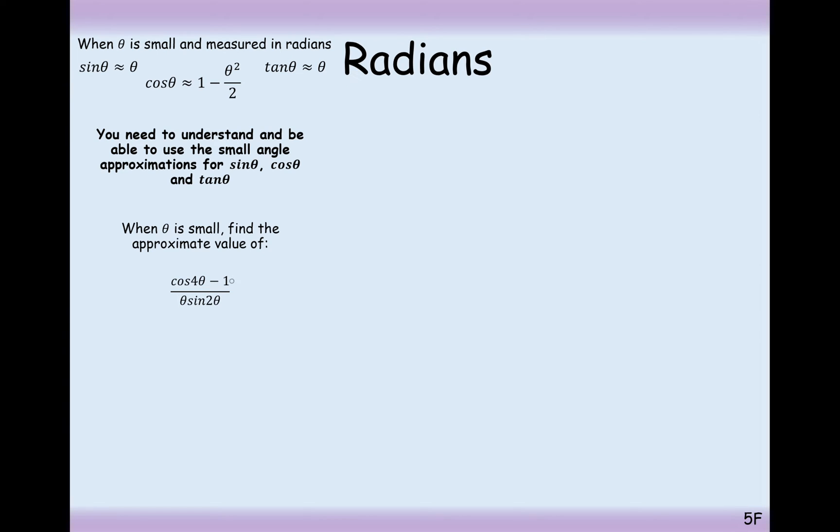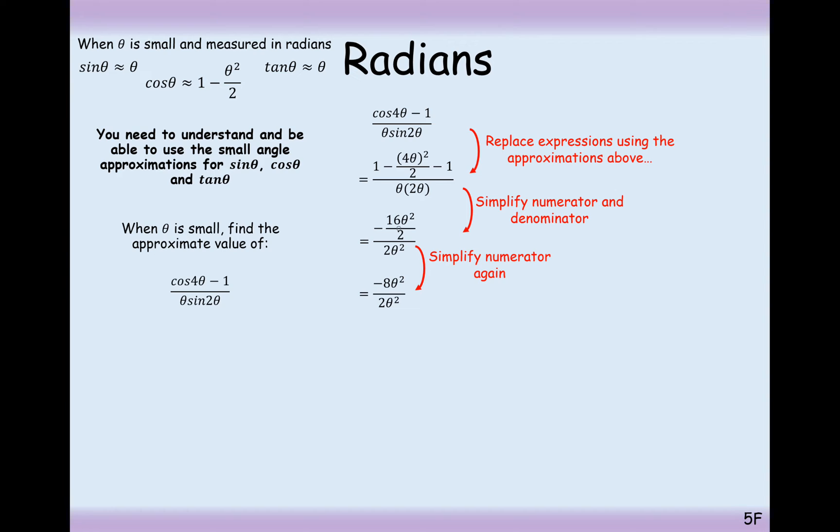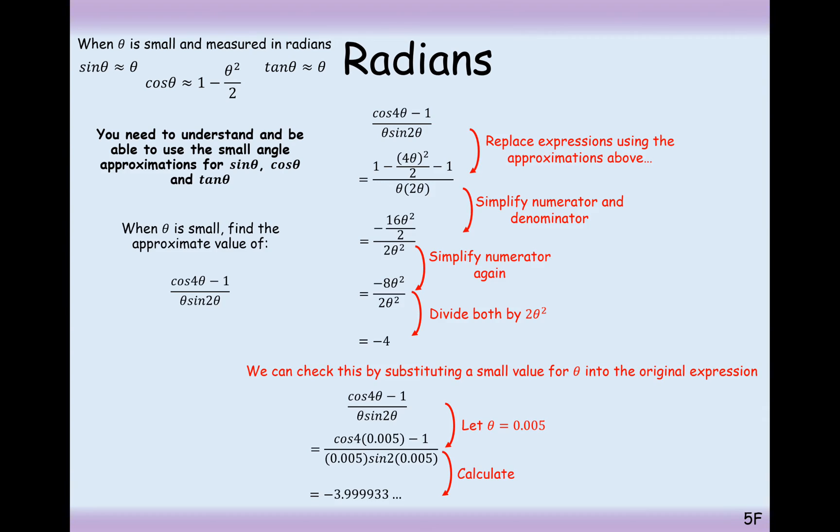Next one here, cos 4 theta minus 1 over theta sine 2 theta. In this case here, it's going to be 1 minus 4 squared, 4 theta squared all over 2 minus 1 over theta brackets 2 theta. Simplifying all of this, the 1 subtract the 1 will give you 0, and then expanding the brackets, we have 16 theta squared. Simplify the numerator, so it's going to be 16 over 2, which is 8. So that will simplify to a minus 8 on the top, and then cancel out and we get minus 4. Substitute in a small value of theta and you should get roughly minus 4, which we do.